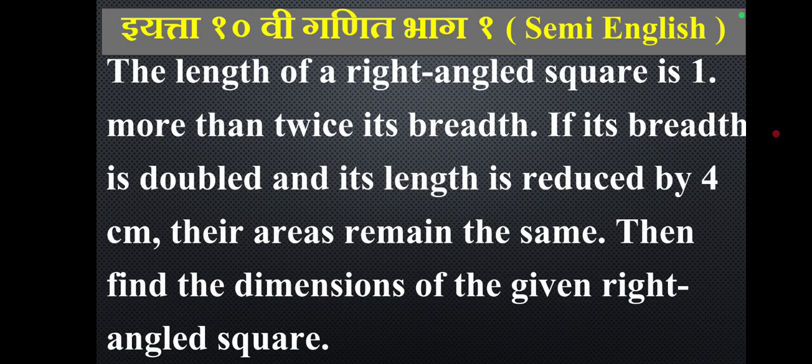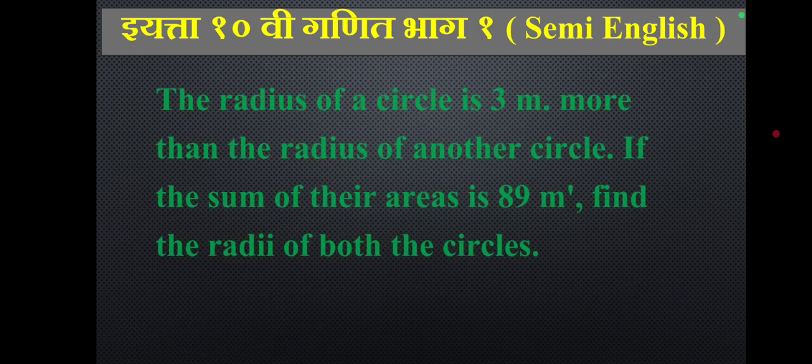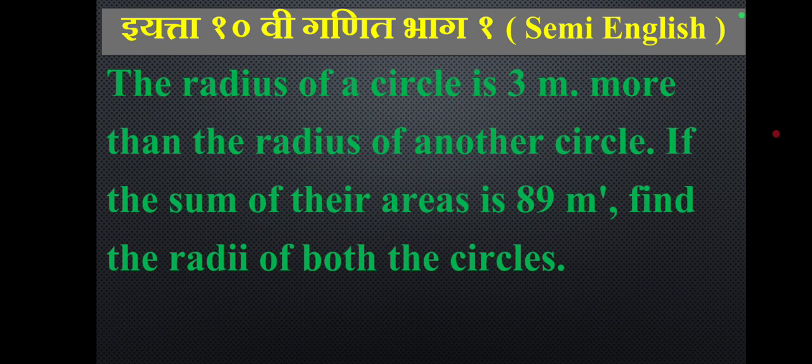The length of a rectangle is one more than twice its breadth. If its breadth is doubled and its length is reduced by 4 centimetres, their areas remain the same. Find the dimensions of the rectangle.